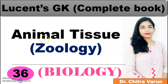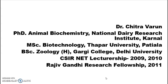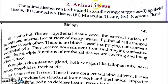Good morning everyone. Today we will discuss animal tissues — this is lecture number 36 from Lucent GKS Biology. Tissues are basically a group of cells that have a similar structure and function. They are made up of cells grouped together to perform a particular specific type of function. They perform a specific function as a unit.